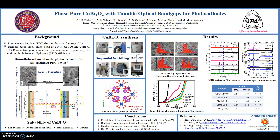Coming back to our present work: out of various materials, we chose eco-friendly and sustainable CBO material for attaining high solar-to-hydrogen efficiency. We used an industrially scalable synthesis process shown in the flow diagram, with the combination of hand milling, ball milling, and sintering. The details will be found in reference two.